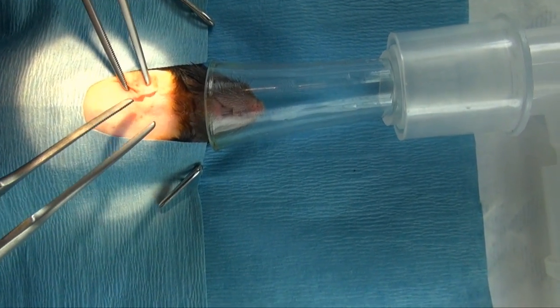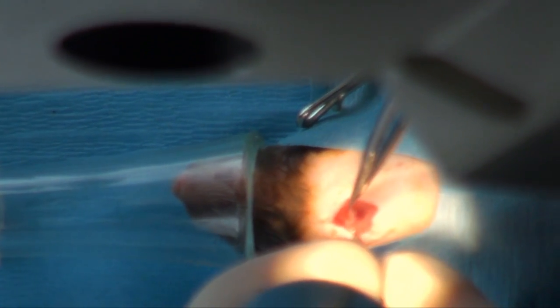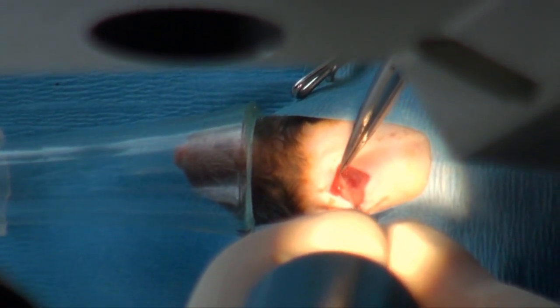Navigate through the planes of tissue by using the blunt dissection technique pictured to expose the right external jugular.